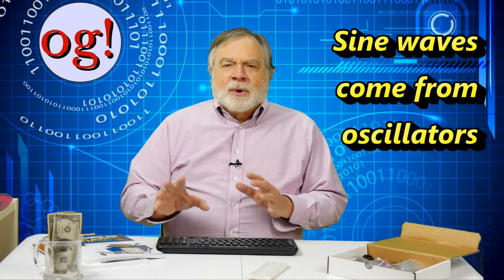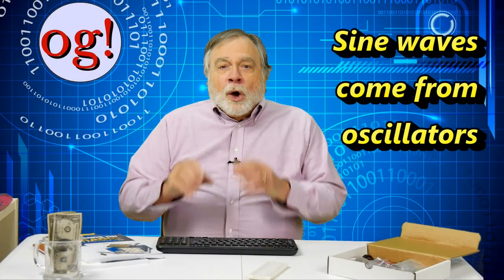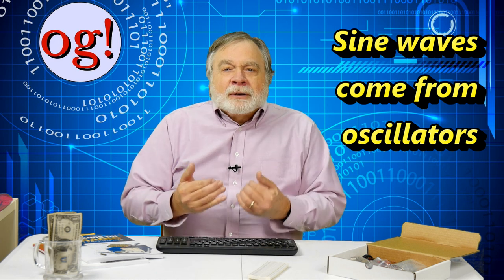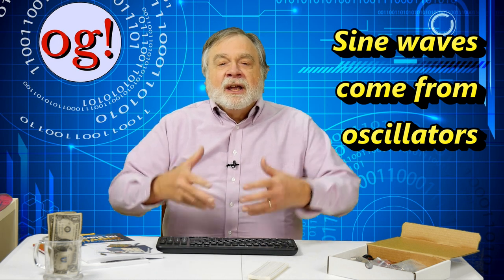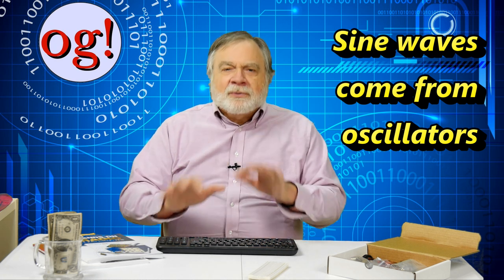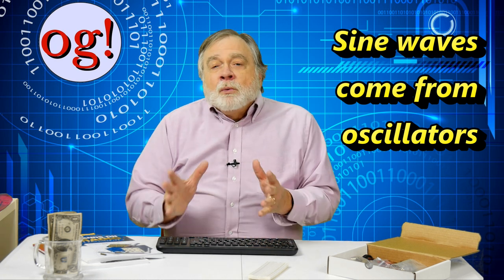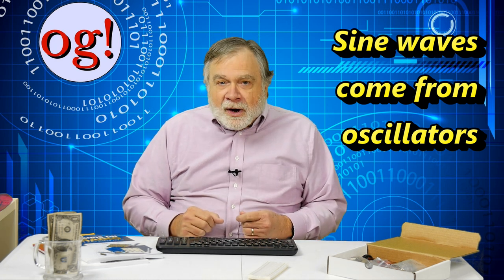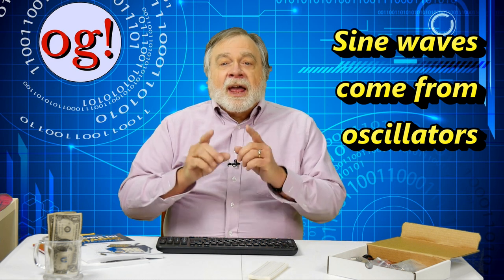Radio is all about sine waves in one form or another. We know that when we send a radio frequency sine wave to an antenna, it radiates and other stations can pick it up. That's totally fundamental to radio. But where do these sine waves come from? The answer: an oscillator.